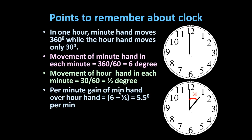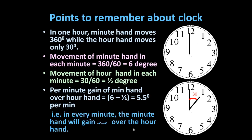So the gain per minute of the minute hand over the hour hand is equal to 6 minus 0.5, which equals 5.5 degrees. This is the important point we should remember while solving various clock problems — in every minute, the minute hand will gain 5.5 degrees over the hour hand.